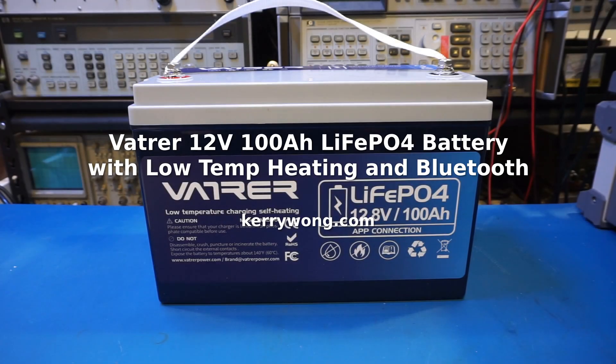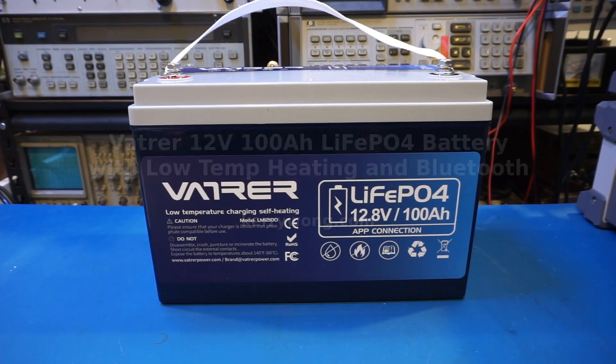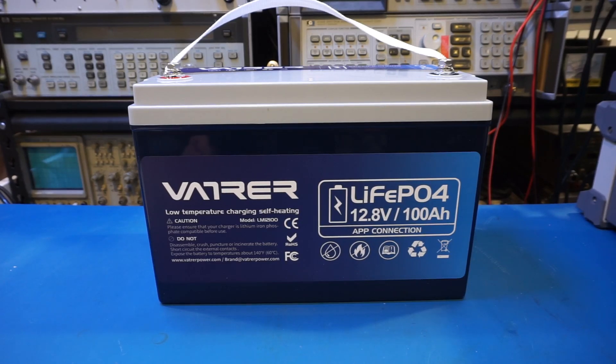Hi, what I have here on the workbench today is another 12 volt 100 amp hour lithium iron phosphate battery. This one was sent in from VATRER, model number LM12100. I will leave a product link in the video description below for those who are interested in getting one after watching this video.